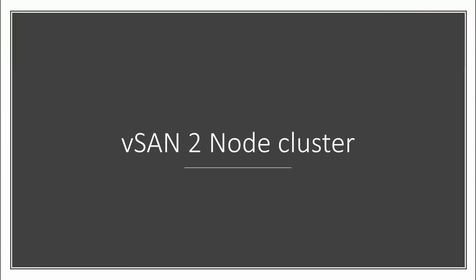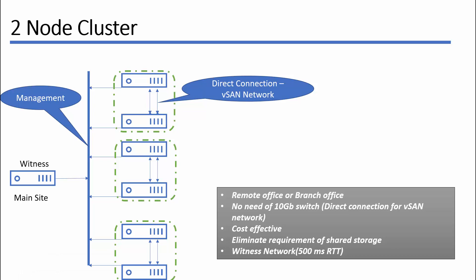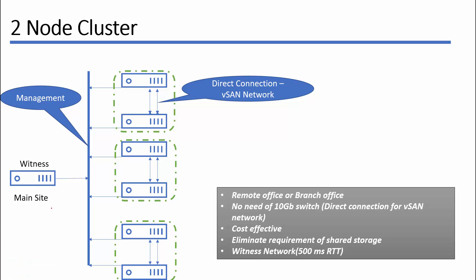Next we are going to talk about the VMware vSAN 2-node cluster. A 2-node cluster consists of two ESXi hosts at one site or one location, and a shared witness at your main site. You can directly connect cables between these two ESXi hosts, which eliminates the need for a 10 gigabit Ethernet switch, saving cost. This also eliminates the requirement for costly shared storage. VMware vSAN keeps the VMDK object in node 1 and node 2, with a witness in a third location, so any failure on node 1 keeps the virtual machine available through the second node.